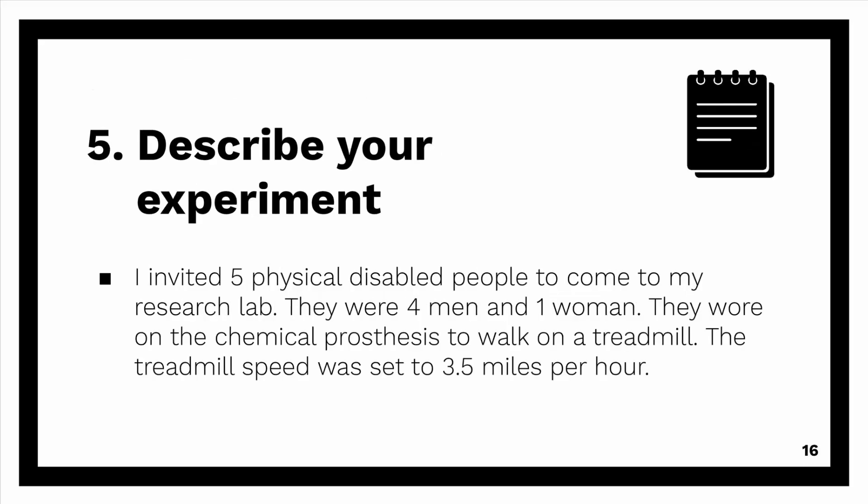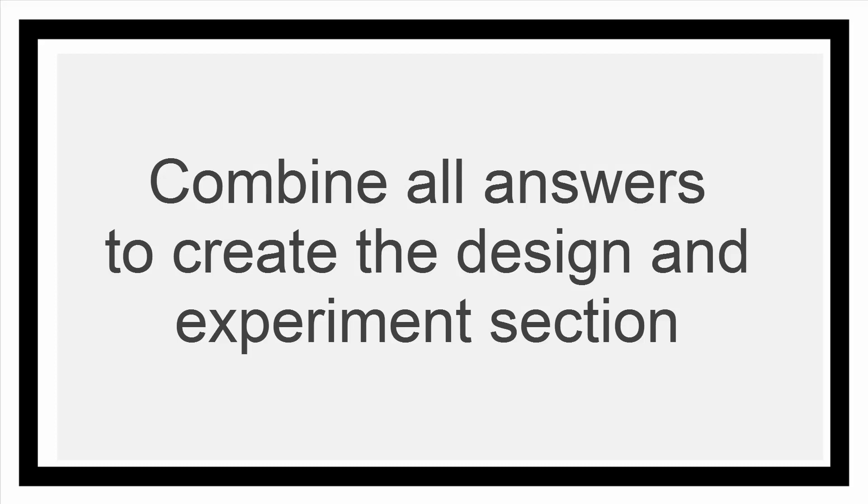The next step is to describe the experiment. In my case, I wrote down: I invited five physically disabled people to come to my research lab. There were four men and one woman. They wore the chemical prosthesis leg to walk on a treadmill. The treadmill speed was set to 3.5 miles per hour. Then you need to combine all the answers in this section together — I'm going to leave that for you, because it is a very simple task.